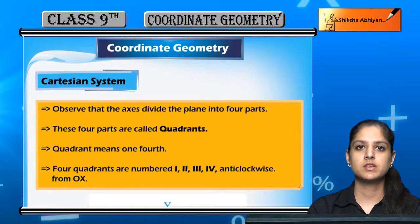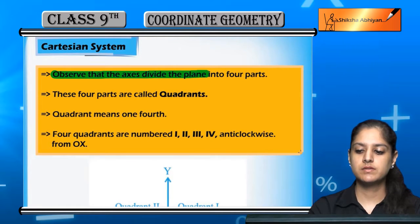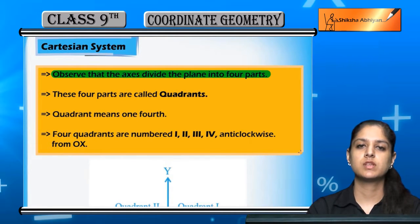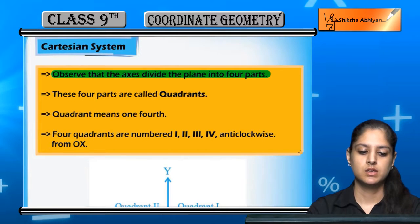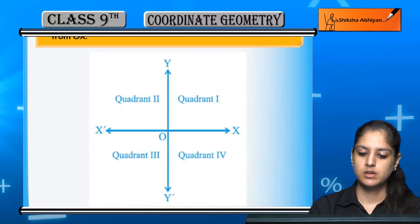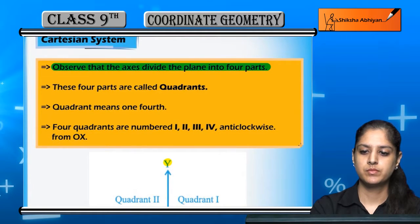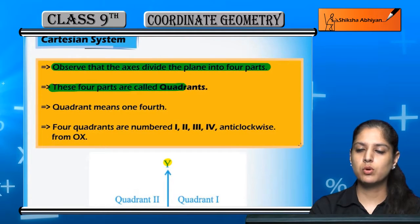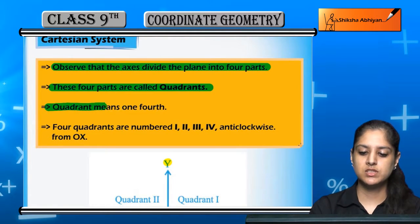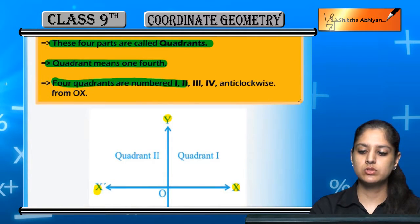Now let us see some things about the Cartesian system. Observe that the axes divide the plane into four parts. We have the x-axis and the y-axis, and together they divide the plane into four parts called quadrants.